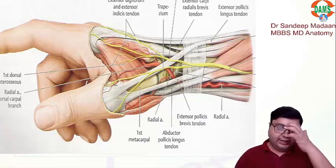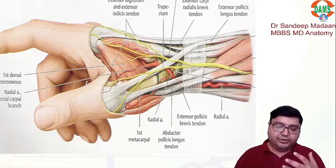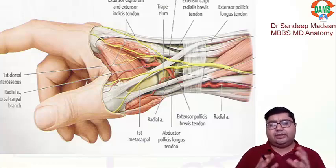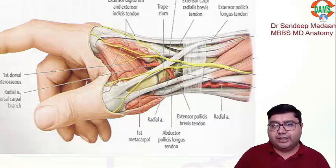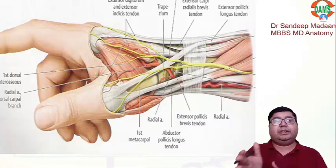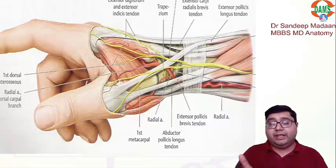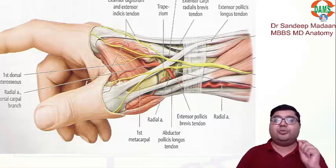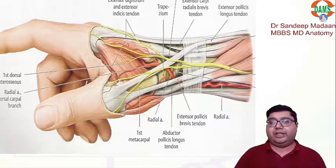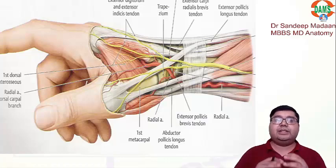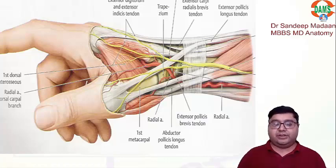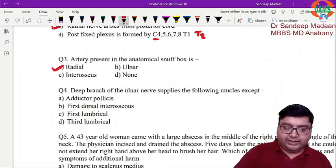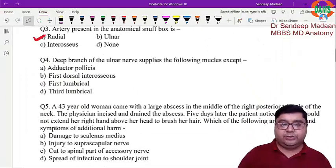If the superficial branch of the radial nerve gets compressed, there will be nerve compression features like paresthesia and numbness — this is called chiralgia. A similar condition happening in the outer thigh is called meralgia. The nerve for chiralgia is the superficial branch of the radial nerve, and the nerve for meralgia is the lateral cutaneous nerve of the thigh.